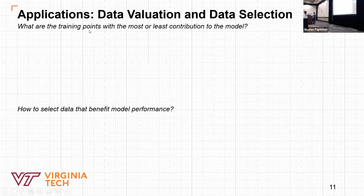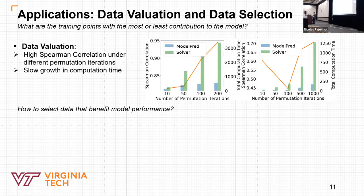For the question of what are the training points with the most or least contribution to the model, we can use the concept of data Shapley. However, estimating the Shapley value requires retraining the model on large subsets. We can apply Model Parade to speed up this process. In this figure, we show the Spearman correlation and computation time of Model Parade versus using the exact learning algorithm with the same number of permutation iterations to calculate the Shapley value. It demonstrates that Model Parade can better represent the true Shapley value with increasing correlation while it has slow growth in computation time with more iterations.